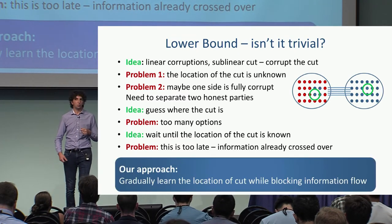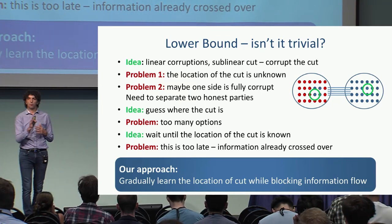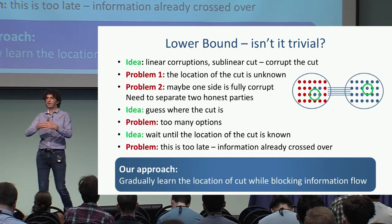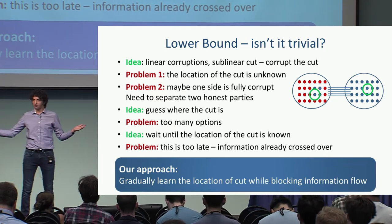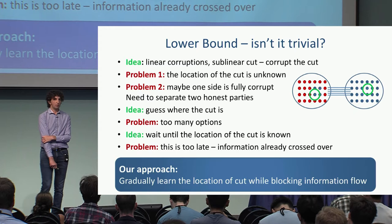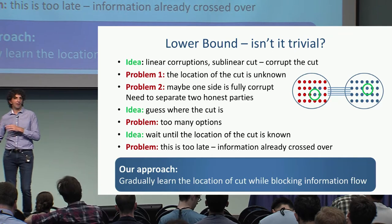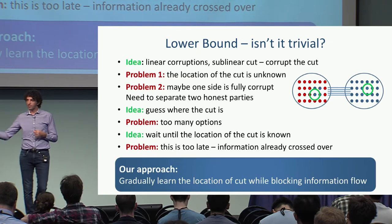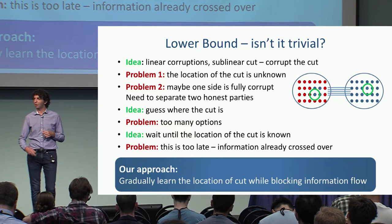The approach we take is to gradually learn how the graph has been formed while blocking all information flow during the time it takes to identify where the sublinear cut will be. Only then does information start to propagate. To carry out this attack, we need multiple adversarial strategies, and we analyze the information flow using information-theoretic and graph-theoretic arguments. It's a very nice attack — I encourage you to read it, but I won't have time to go over it now.